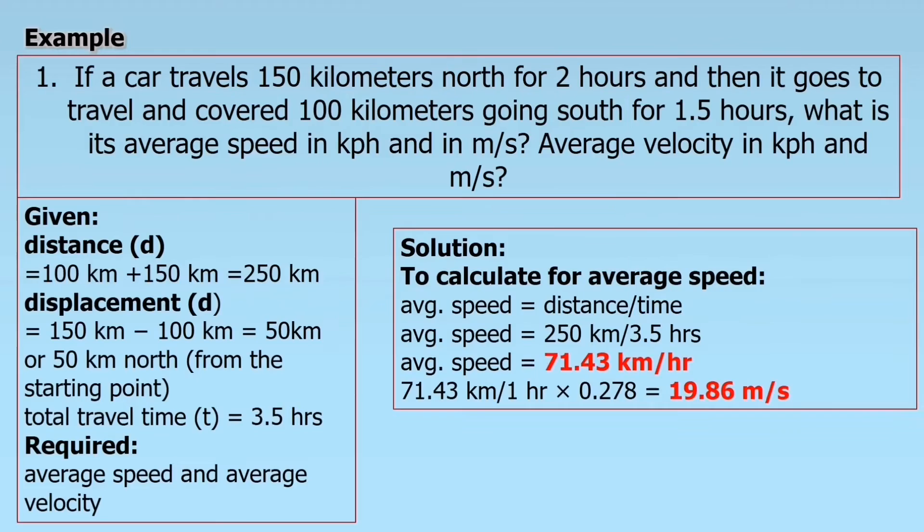For example, here we have a situation. If a car travels 150 kilometers north for 2 hours and then it travels and covers 100 kilometers going south for 1.5 hours, what is the average speed in kilometer per hour and in meter per second, and the average velocity in kilometer per hour and meter per second? We have the given here: the distance, 100 kilometers plus 150 kilometers equals 250 kilometers. The total travel time is 3.5 hours.